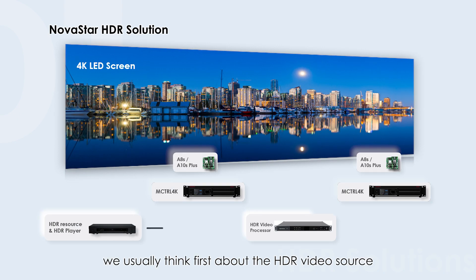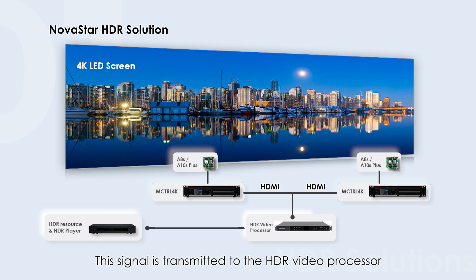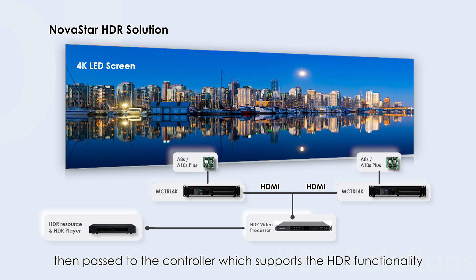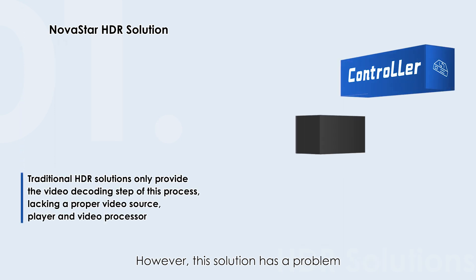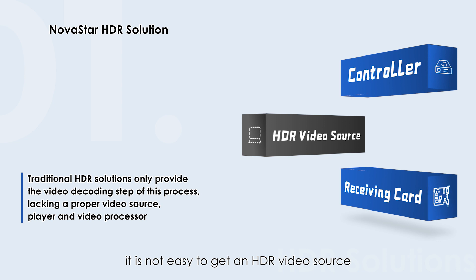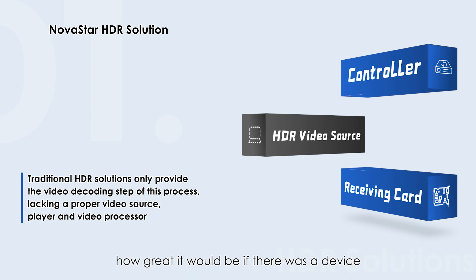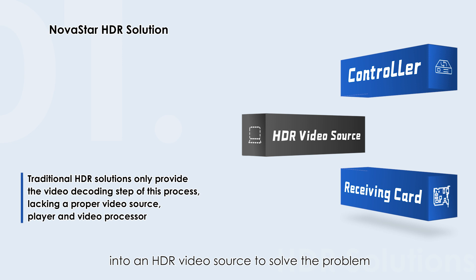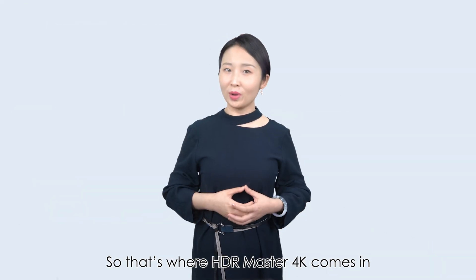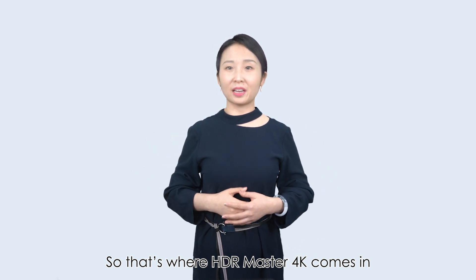When we think about HDR solutions for an LED screen, we usually think first about the HDR video source. The signal is transmitted to the HDR video processor, then passed to the controller, which supports the HDR functionality. However, this solution has a problem — it is not easy to get an HDR video source. The high cost of shooting an HDR video makes many customers give up. So we began to think how great it would be if there was a device that can transform an SDR video source into an HDR video source to solve the problem.